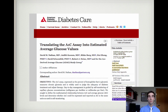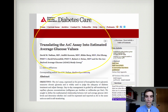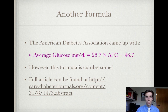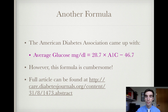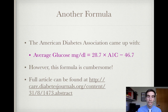The American Diabetes Association came up with a formula for translating the A1c assay into estimated average glucose levels. The formula is: average glucose in milligrams per deciliter equals 28.7 times A1c minus 46.7. Remember the order of operations — 28.7 times A1c first, then subtract 46.7. I find this formula to be a little bit cumbersome. You can find the full article at the link below.